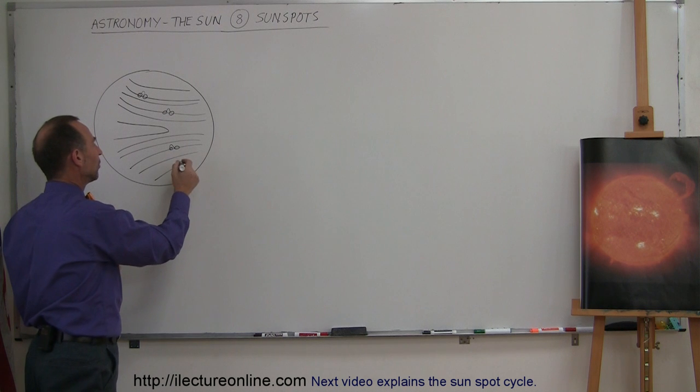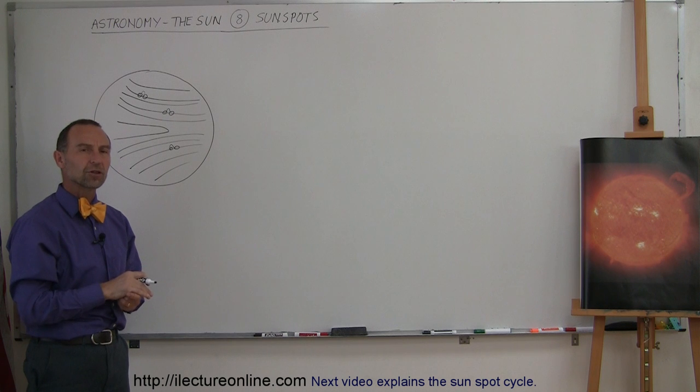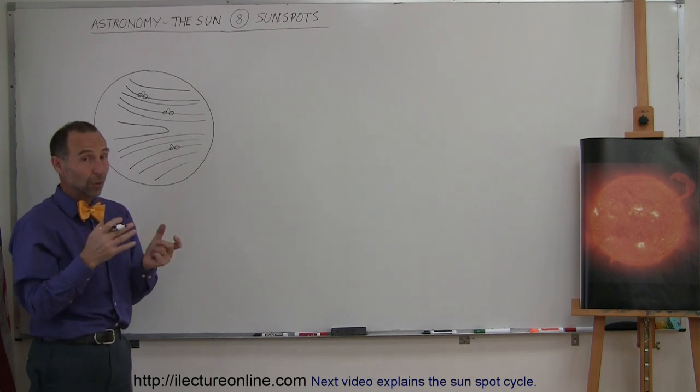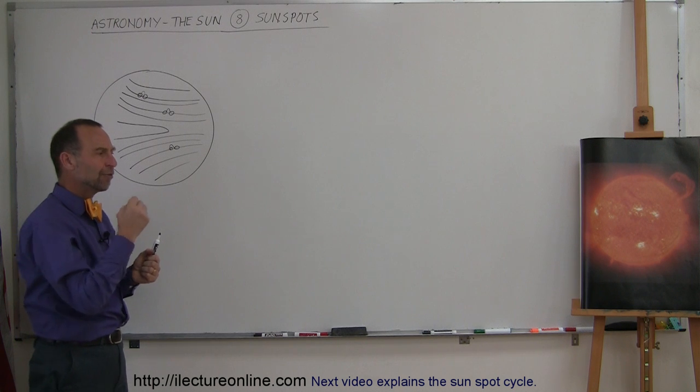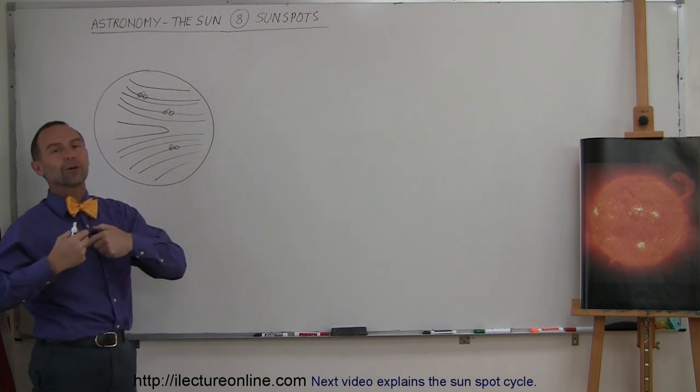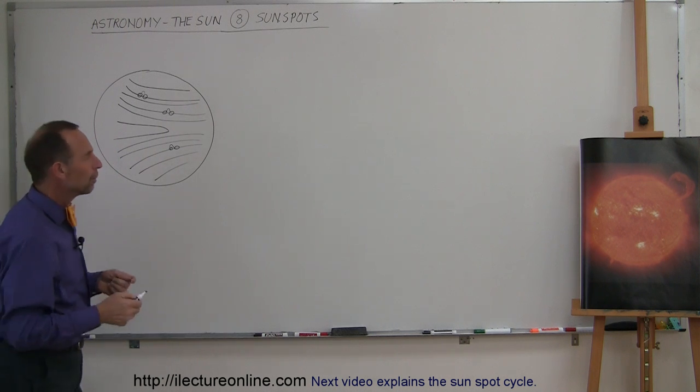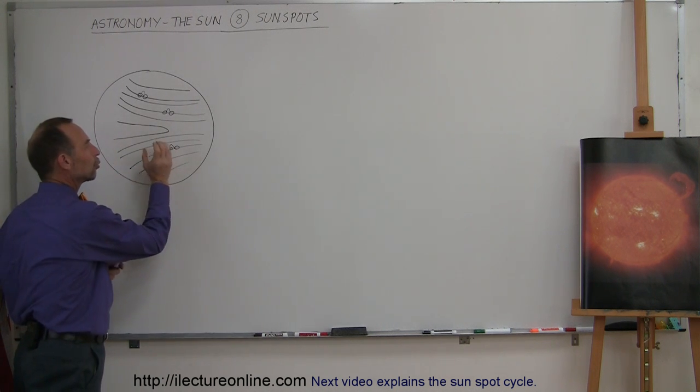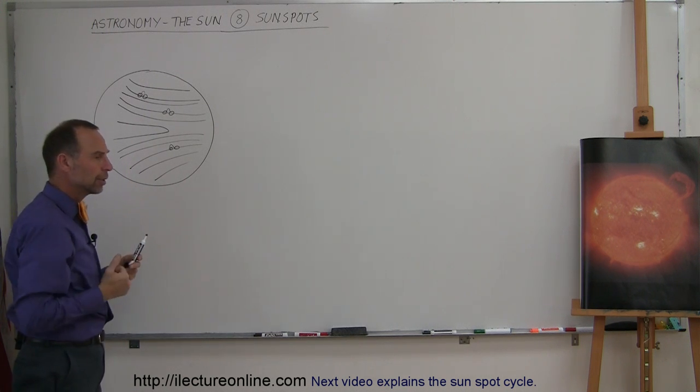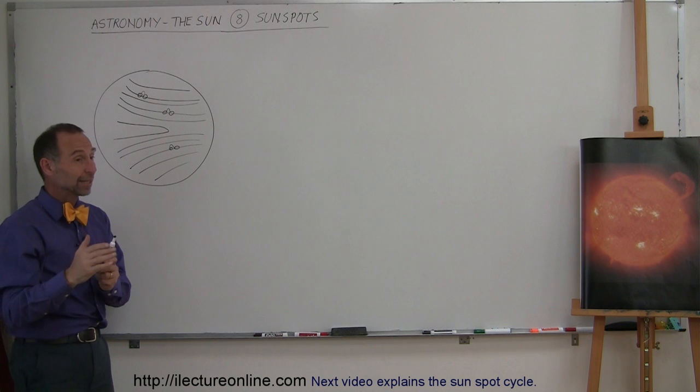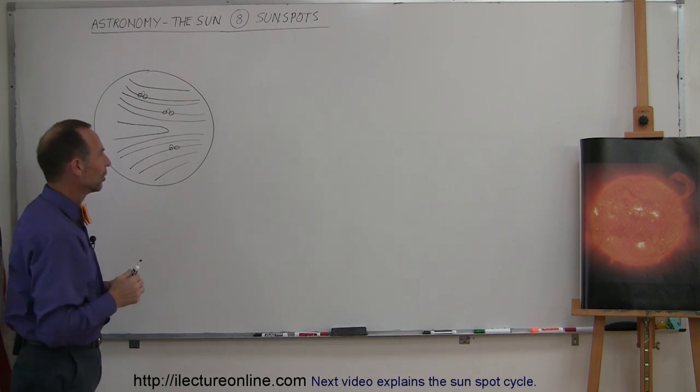Sunspots were actually noted by Chinese astronomers more than 2,000 years ago. We always think about Galileo as the one who discovered sunspots, but people have seen them before. Sometimes the sunspots come in groups and get so large that they're actually visible with the naked eye from Earth. Of course, you don't want to look at the Sun with the naked eye; you want to have some sort of protection, otherwise you will damage your eyes.